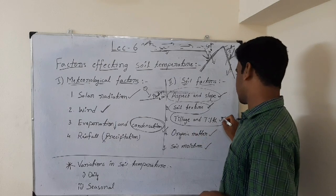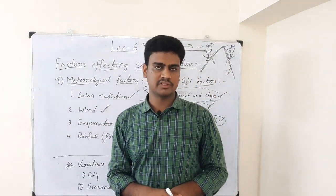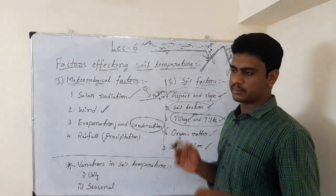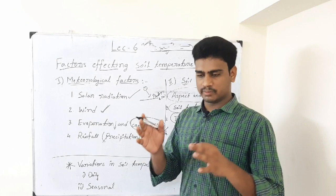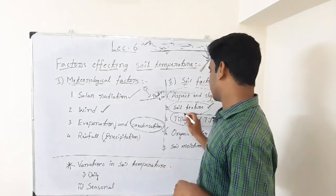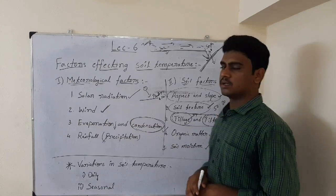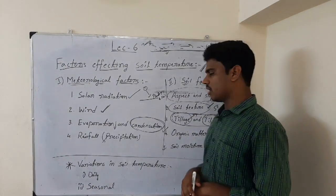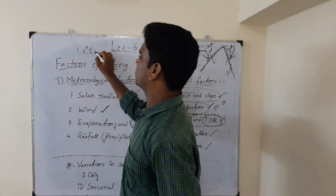The next soil factor is tillage and tilt. Tillage means the mechanical manipulation of soil. Tilt is the end product of tillage - when the soil has an equal proportion of macro pores and micro pores, 50% macro pores and 50% micro pores, the soil is considered well tilled, and that condition is called tilt.